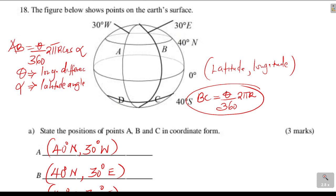Remember B and C are located on different latitudes but the same longitude. The latitude difference: B is 40 degrees north, C is 40 degrees south, so we add — 40 plus 40 equals 80 degrees. So the latitude difference is 80 degrees.